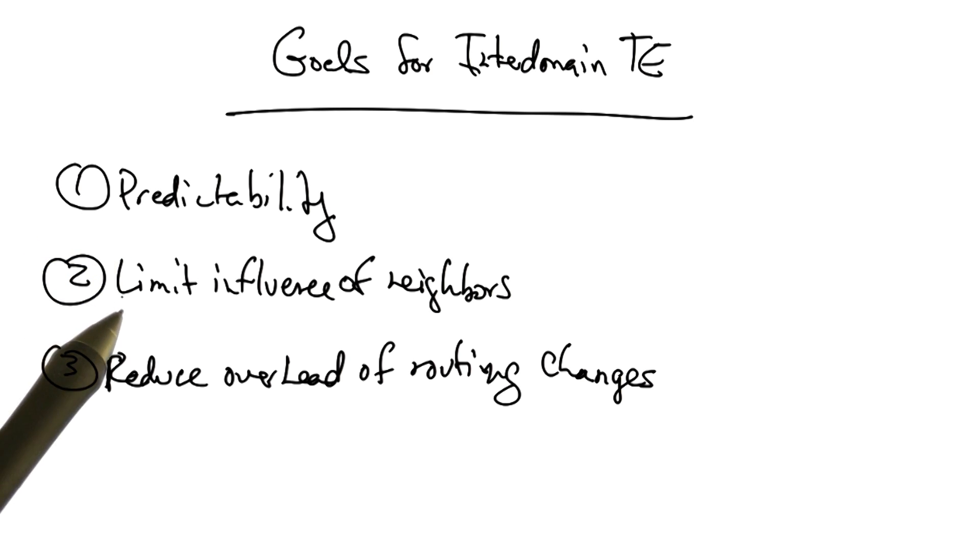Another goal is to limit the influence of neighboring domains. In particular, we'd like to use BGP policies and changes to those policies that limit how neighboring ASs might change their behavior in response to changes to the BGP configuration that we make in our own network. And finally, we'd like to reduce the overhead of routing changes by achieving our traffic engineering goals with changes to as few IP prefixes as possible.